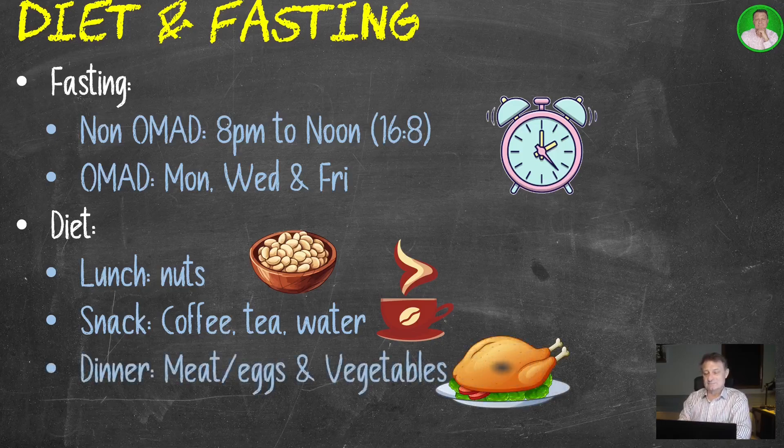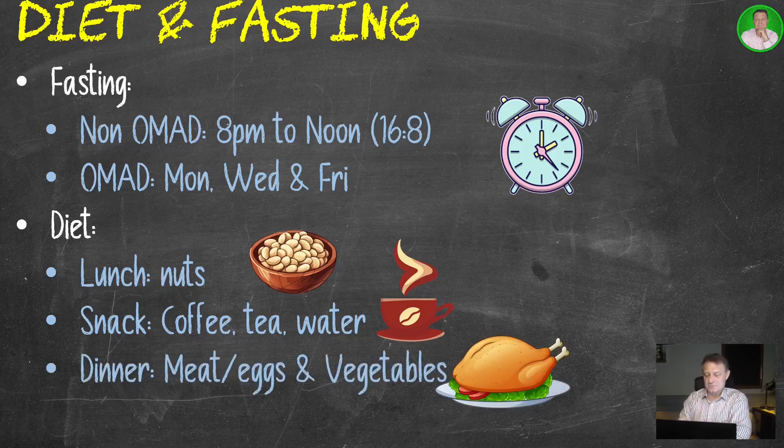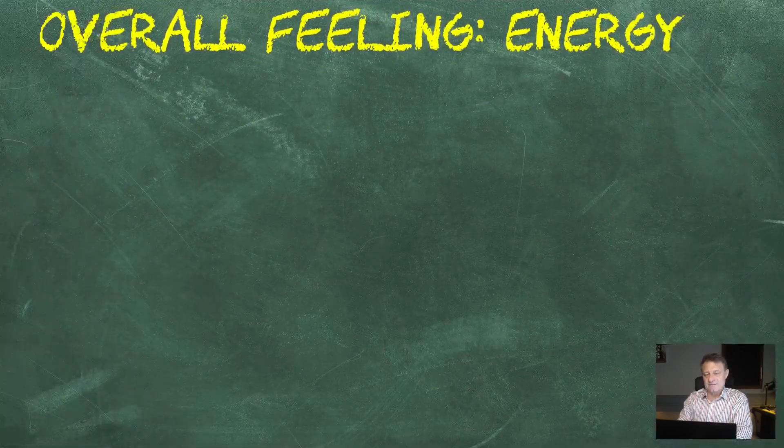And then evening meal is always meat, nine times out of ten it's eggs, sometimes vegetables, not as many vegetables as I used to eat when I first got here or when I was back in the Middle East. So that's it for my diet and my fasting protocol.